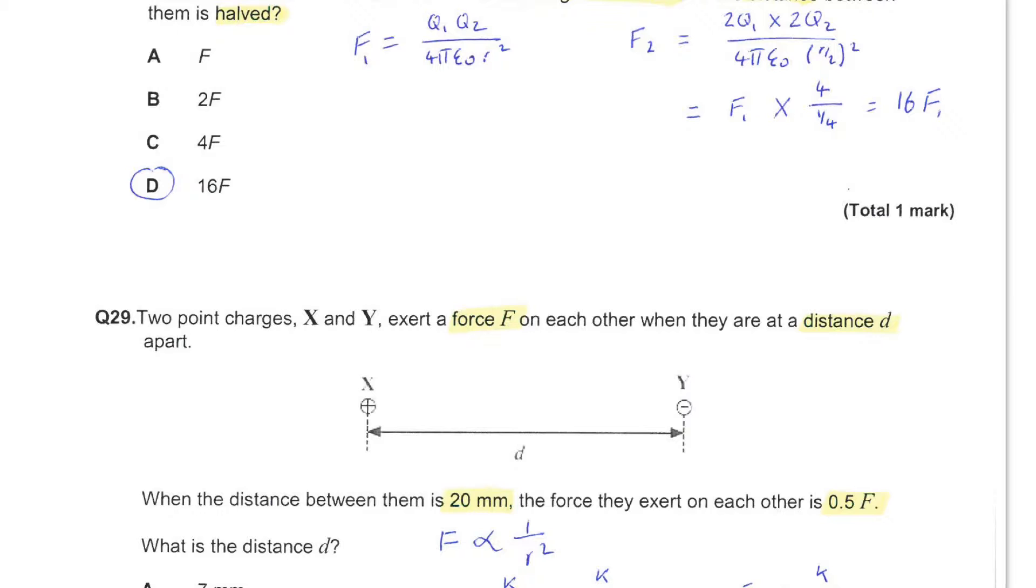This leads to a factor of 4 on the top of the fraction and a quarter on the bottom. The remaining terms Q1Q2 and 4πε0R squared are unchanged and equal F1. So here we end up with a factor of 16 times the original force.